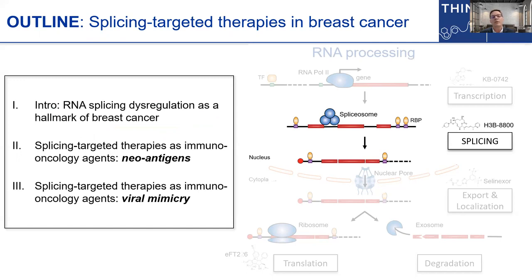We'll do that in three parts. First, I'll start with a brief introduction as to why we and many others in the cancer community are so interested in RNA splicing. And then I'll share with you two vignettes studying splicing-targeted therapies — how they work, and the unanticipated discovery that some STTs may awaken anti-tumor immunity in some new ways.